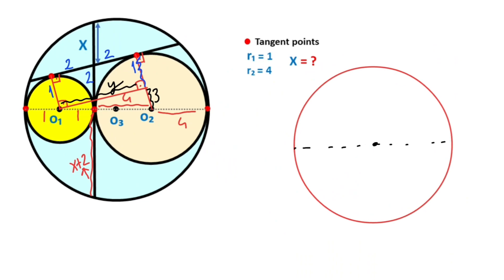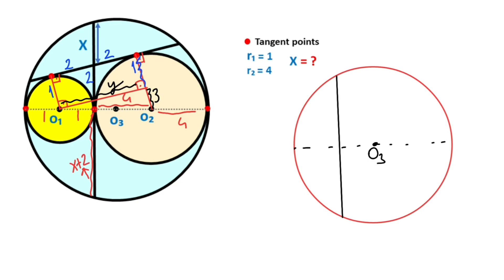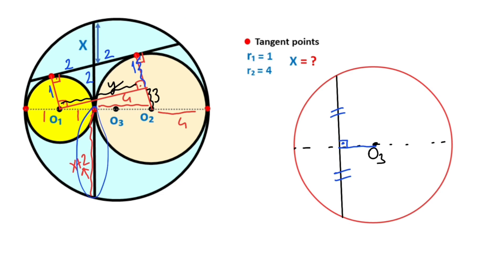Let's call this the center of the biggest circle and draw a chord. Notice that this red point is a tangent point, so this angle must equal 90 degrees. If it is 90 degrees, this chord must be divided into two equal parts, because if you draw a perpendicular from the center, the chord must be divided into two equal parts.